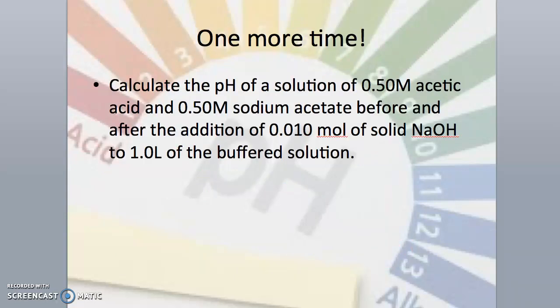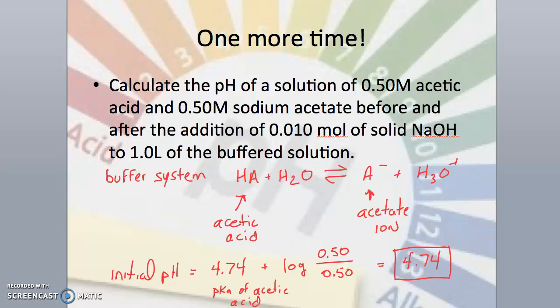Practice makes perfect, so pause the video. Give this one a try. The pH before adding any base is calculated using the Hasselbalch equation. Notice that we have equal amounts of our weak acid and conjugate base, so the pH will be equal to the pKa for acetic acid.